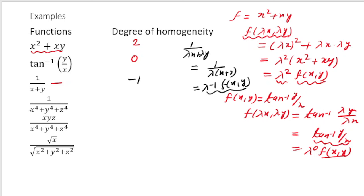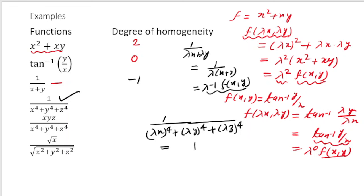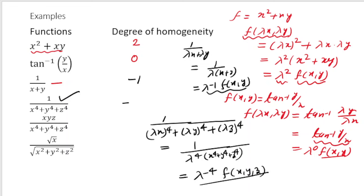For the function x⁴ + y⁴ + z⁴, substituting λ gives λ⁴x⁴ + λ⁴y⁴ + λ⁴z⁴ = λ⁴(x⁴ + y⁴ + z⁴), so this is a homogeneous function of degree 4. Similarly, another example shown has degree −4. I want you to find the degrees of homogeneity for functions 5 and 6 in the comment section.